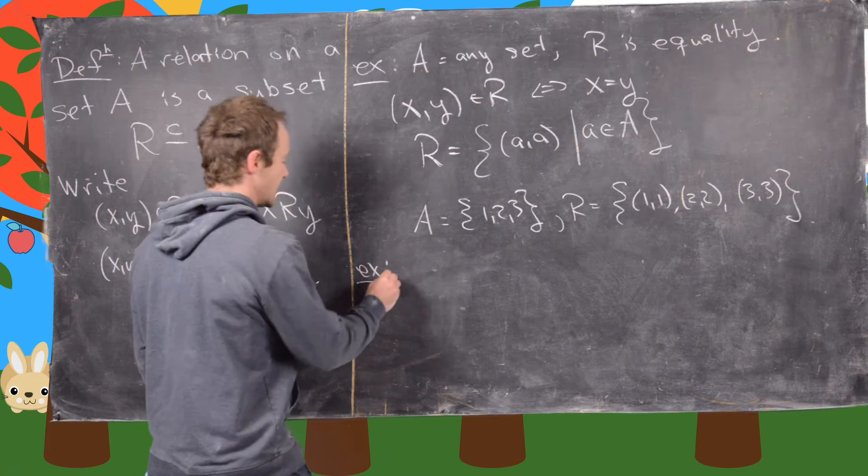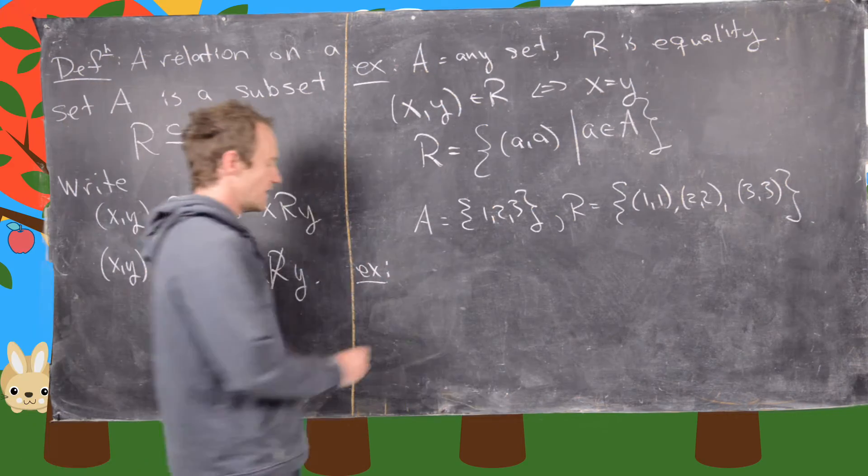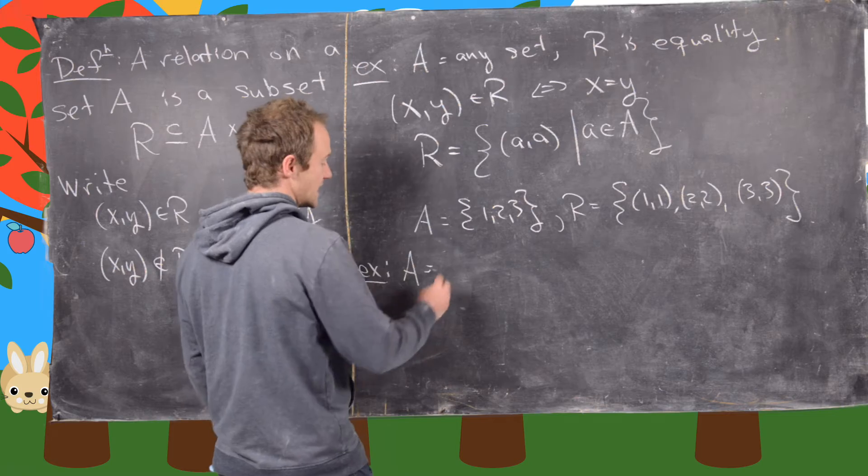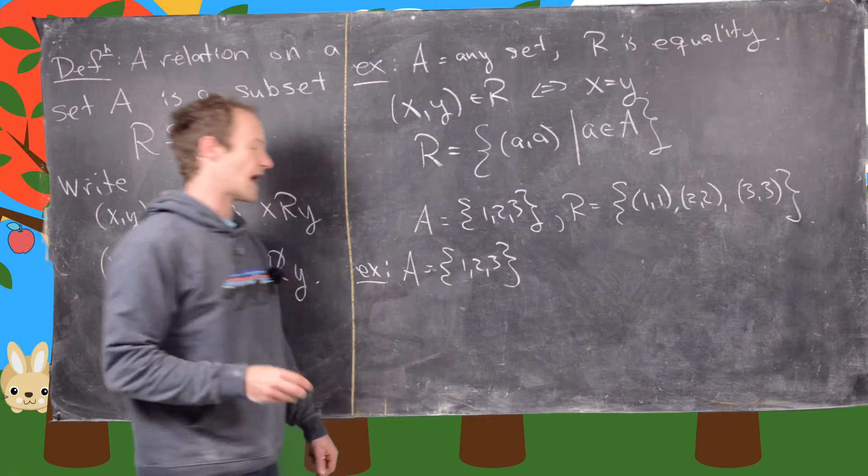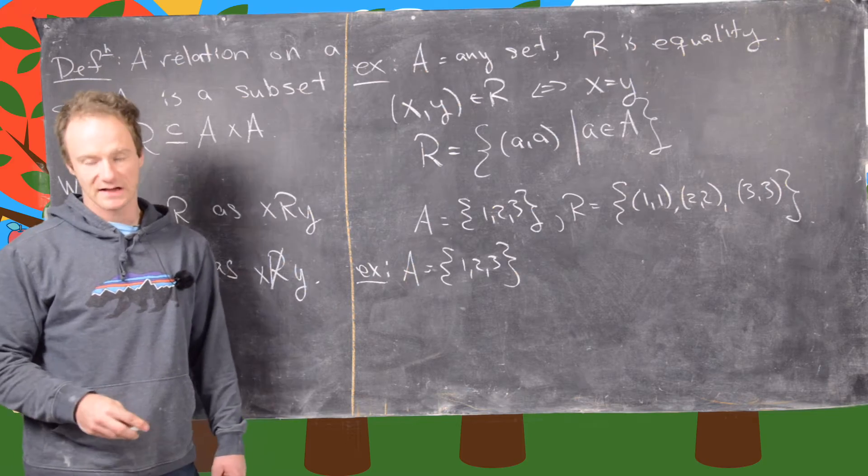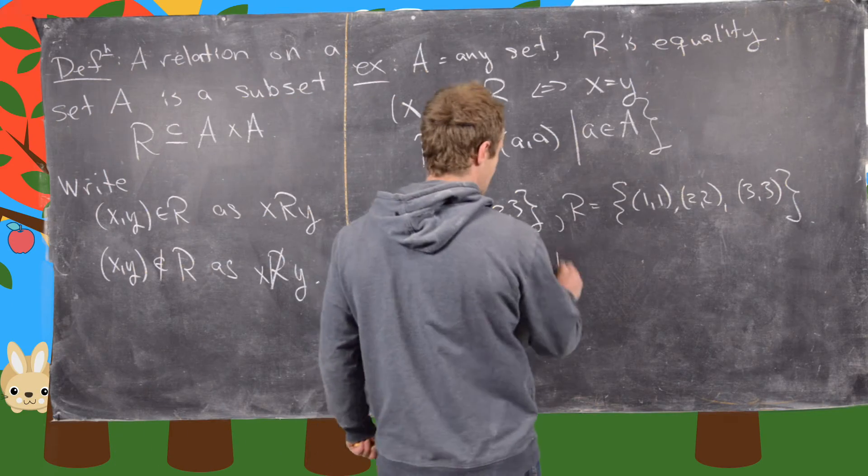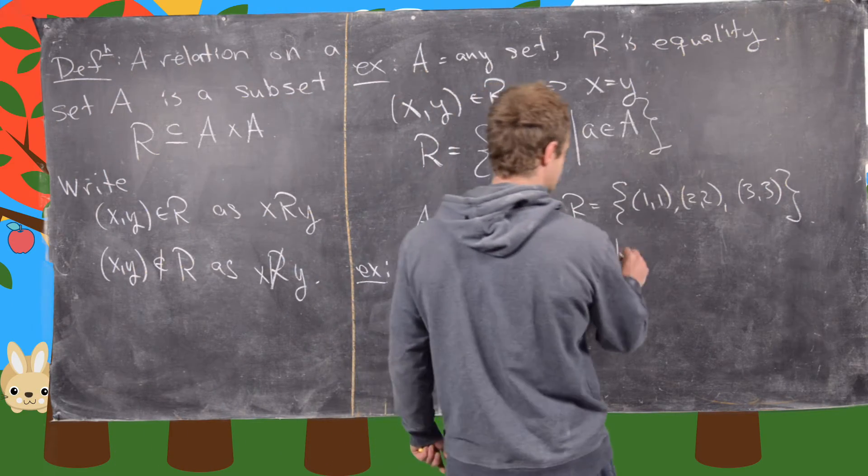So let's look at another example. In this case, let's take A to be the set 1, 2, 3, just as we had up here. But let's have a slightly different relation. Let's say R is less than or equal to.